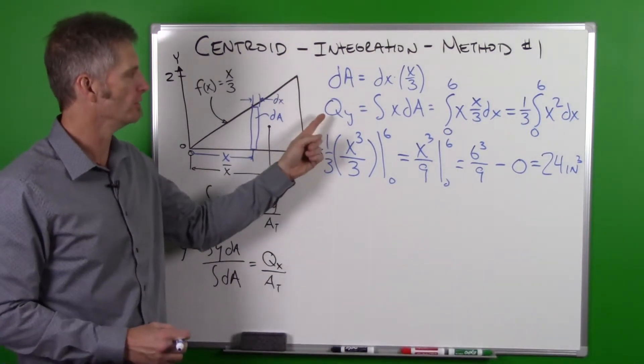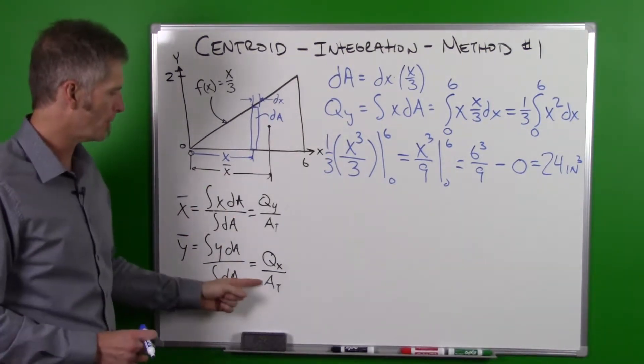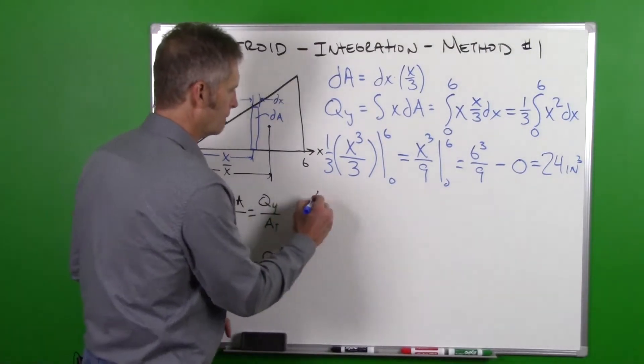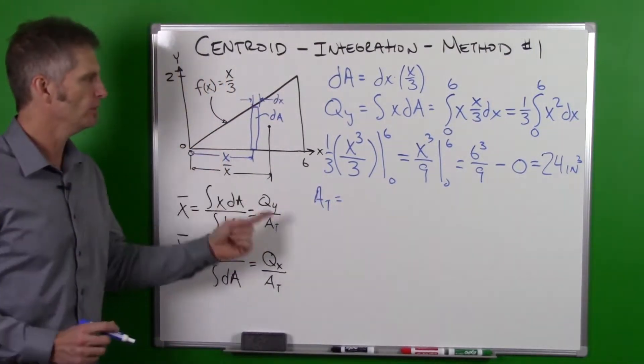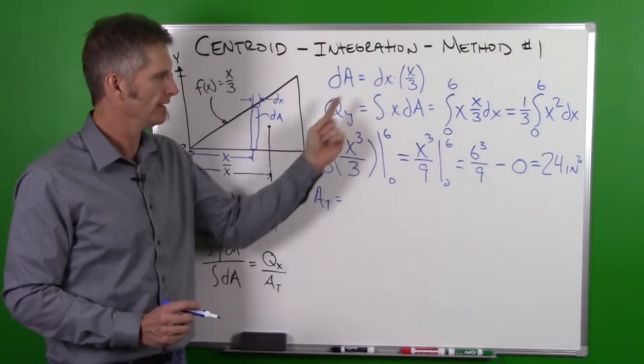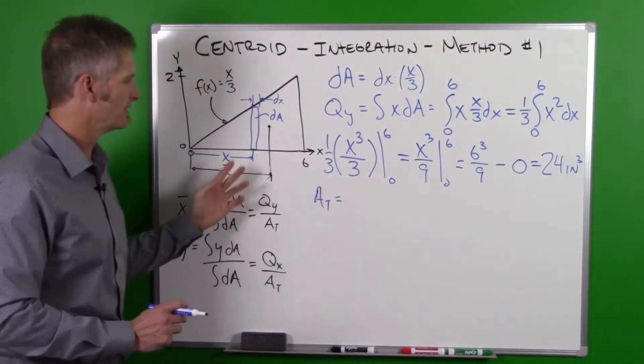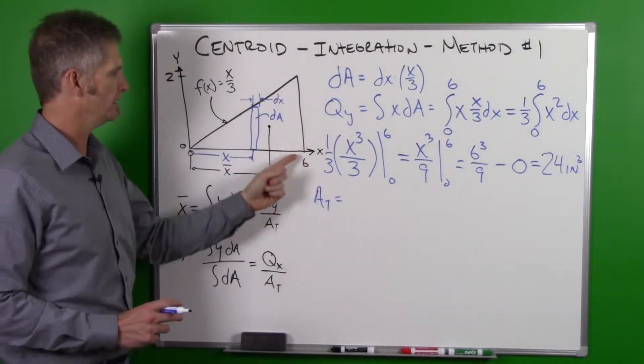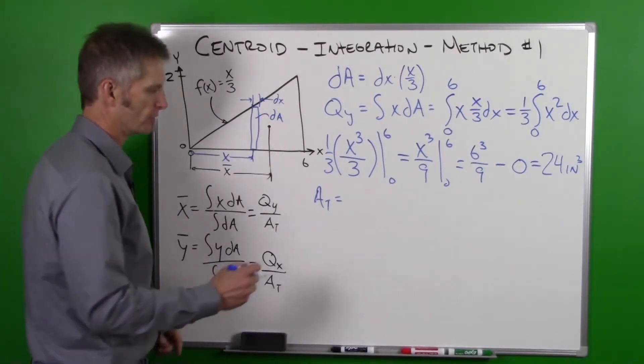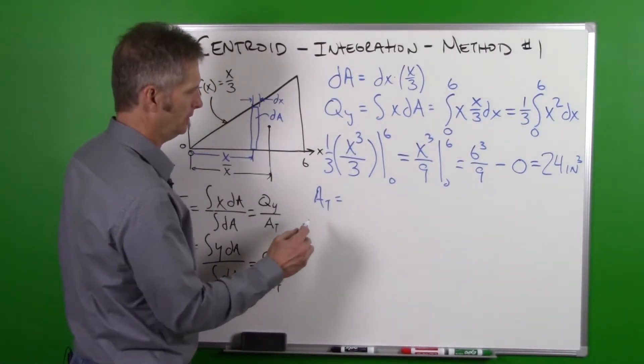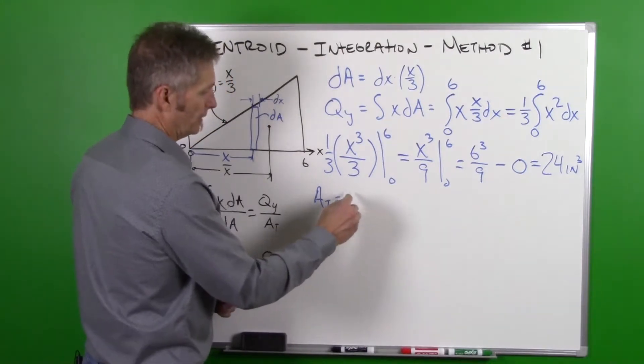Now we need to come up with our area. So our area total, we could do the integral of dA and come up with the area, or in this case we're just going to use the equation for a triangle, although we could do it either way.